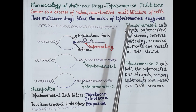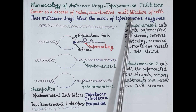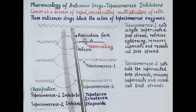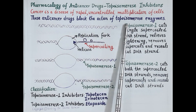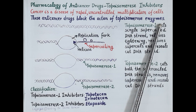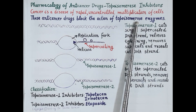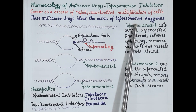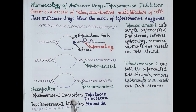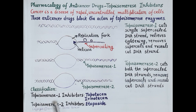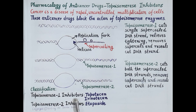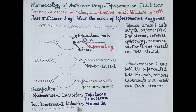Topoisomerase inhibitors are drugs that block the action of topoisomerase enzymes. These drugs are of two types: topoisomerase 1 inhibitors and topoisomerase 2 inhibitors. Topoisomerase 1 inhibitors include topotecan and irinotecan. The topoisomerase 2 inhibitor is etoposide.